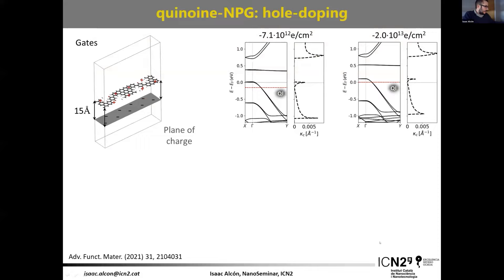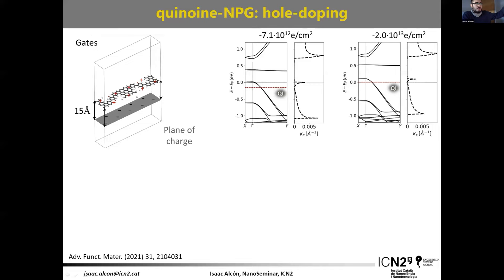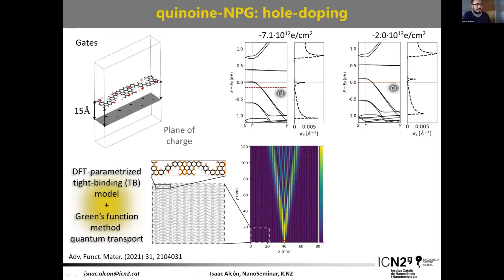To play with the electronics of this material, we applied a gate. In DFT we used a plane of charge to generate counter-charge on the material, doping it, and then used DFT-parameterized tight-binding Hamiltonians to study larger-scale systems. For a small concentration of holes, the Fermi level is at the onset of the band and quantum interference doesn't effectively take place. Applying larger gates puts the Fermi level right at the quantum interference point, enabling full confinement of currents.